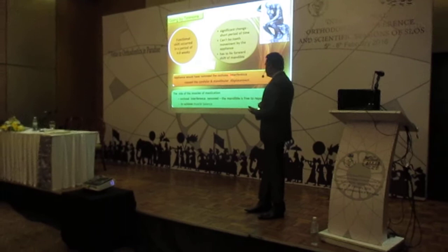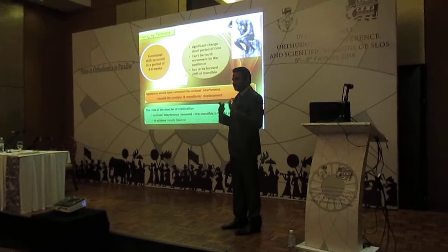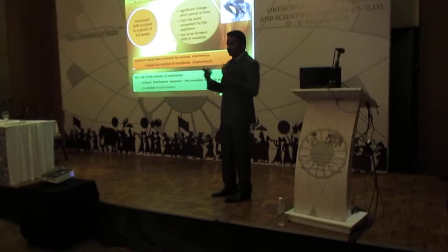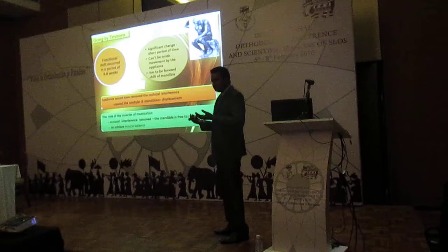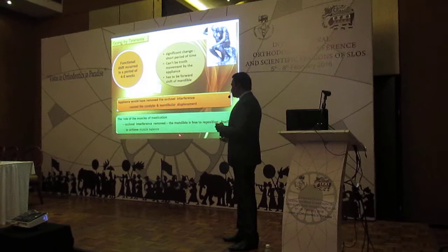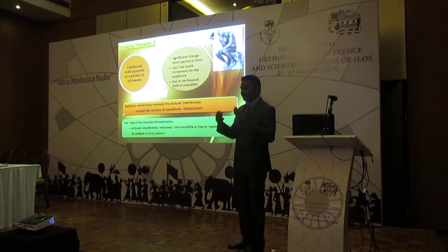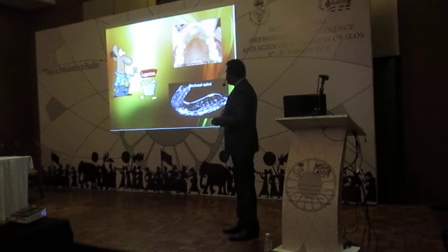What happens is: there is a locking of the mandible by the retroclined maxillary anteriors. The mandible is pushed backward by this locking mechanism. Once we procline the anteriors and the locking is relieved, the mandible is free to swing forward. The muscles of mastication, stressed due to the alternate path of closure, achieve muscle balance and pull the mandible into its natural forward position.